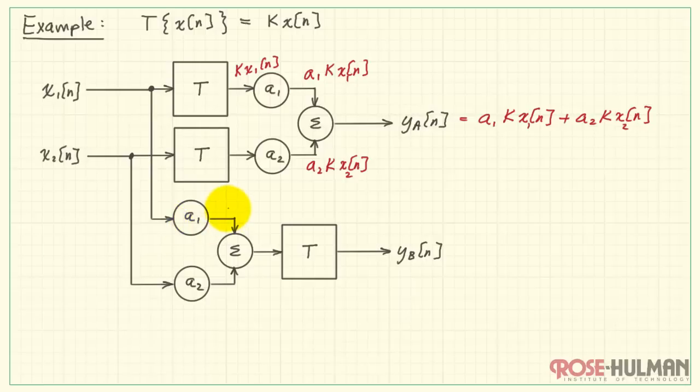Now I'll pass x1 through the scale factor, x2 through its scale factor, and then add those together. And this happens before we apply it to the system function T.